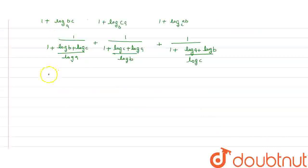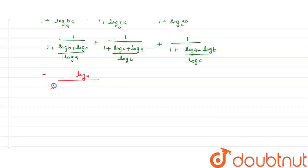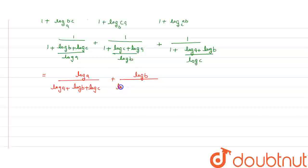Now we will solve this. We will take log a and find the LCM. So the first term becomes log a plus log b plus log c. The second term becomes log b upon log a plus log b plus log c.